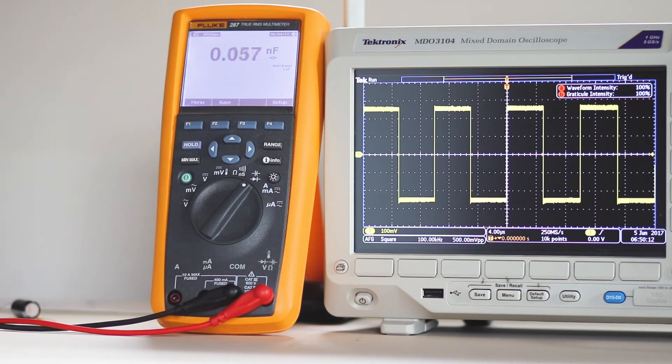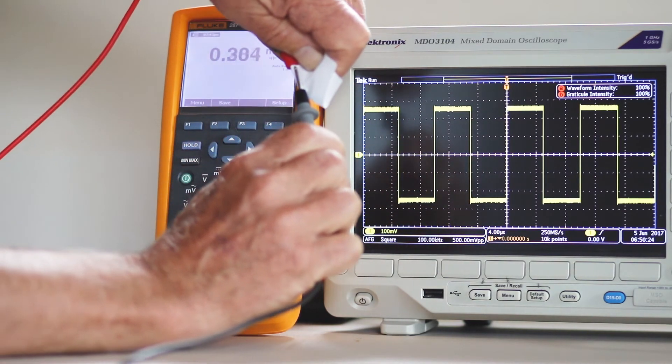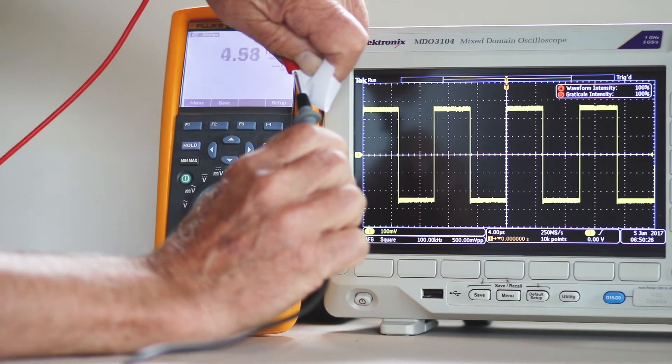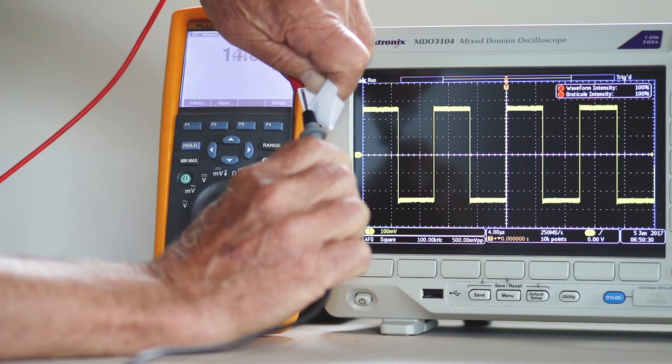Another experiment is to wrap paper around one of the probes and bring it in contact with the other probe. We keep the probes parallel, and you can see there is a definite capacitance.